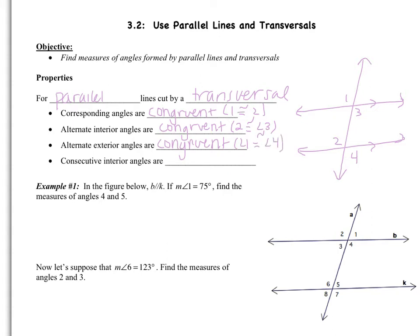Consecutive interior angles are supplementary — these are the ones that are different. So that would be like angles 3 and 5: they're both interior, but on the same side of the transversal. So angle 3 plus angle 5 equals 180 degrees. Everything we're going to do today is based on these properties.